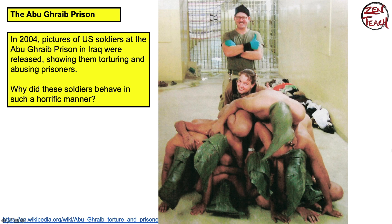When I went to school in 2004, I still remember seeing these pictures in the news. The pictures showed U.S. soldiers in Iraq at a prison called the Abu Ghraib prison, torturing and abusing prisoners of war. The question back then was, why did these people — how were these soldiers able to behave in such a horrific manner, and was this an isolated incident?